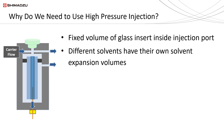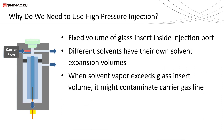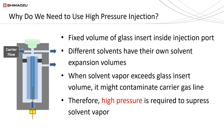When solvent vapor exceeds the volume of the glass insert, backflash will occur — solvent vapor containing the sample will overflow to the carrier gas line. The carrier gas line is not heated, so condensation will occur. When condensation occurs, it means samples will stay in the carrier gas line as contaminant. In such a case, there is a need to increase the pressure so that solvent vapor is suppressed and not overflowing to the carrier gas line.